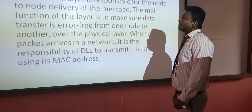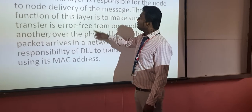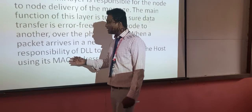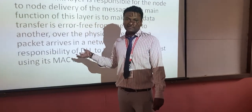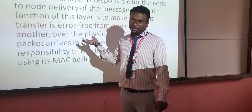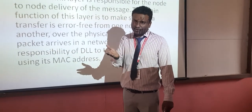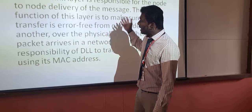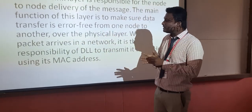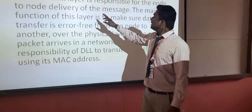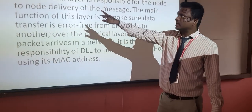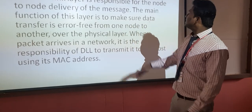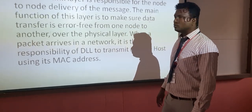Next is the data link layer, where data is in the form of frames. In the data link layer, the MAC address — the physical address of the system — is added. Before this, IP addresses and port numbers were added in previous layers. In this layer, MAC address is added. The data link layer is responsible for node-to-node delivery — system-to-system delivery. Its main function is to ensure error-free data transfer from one node to another.